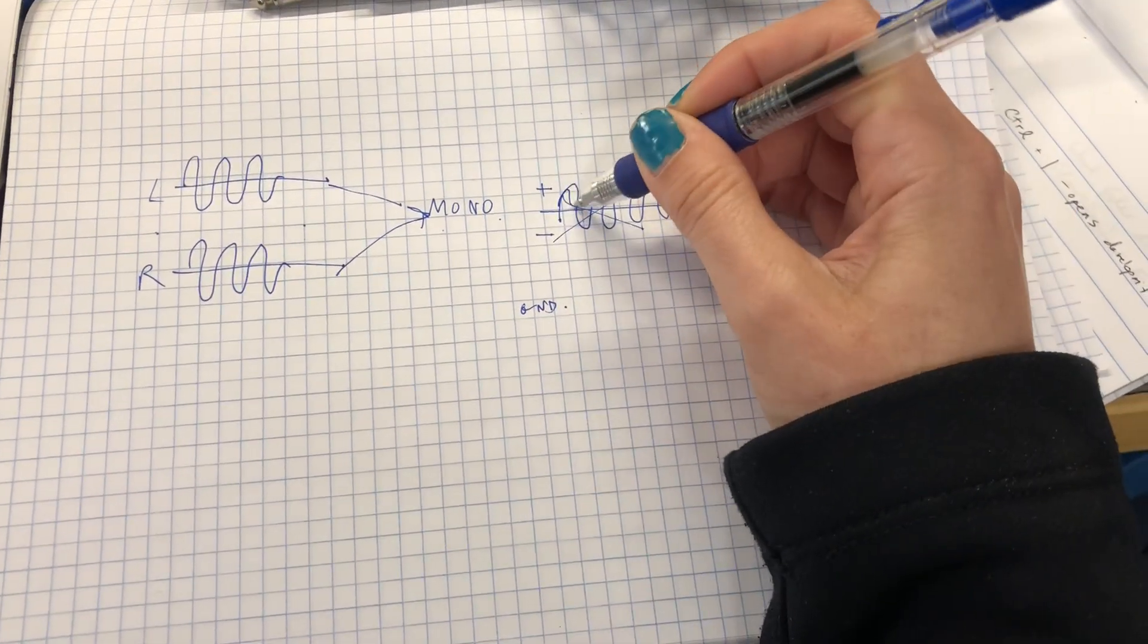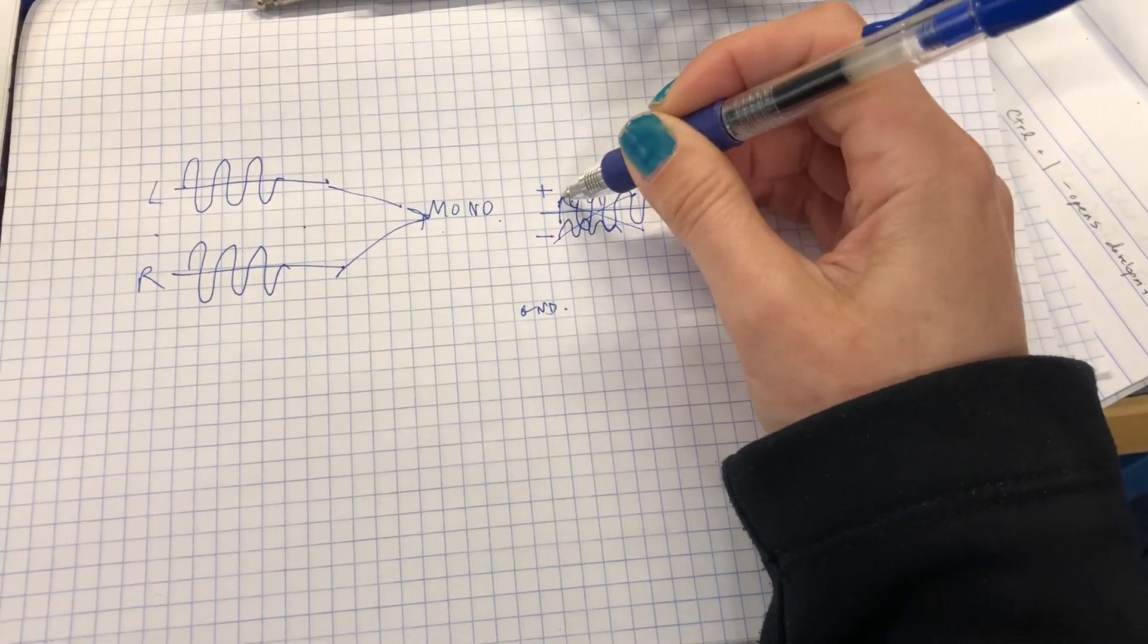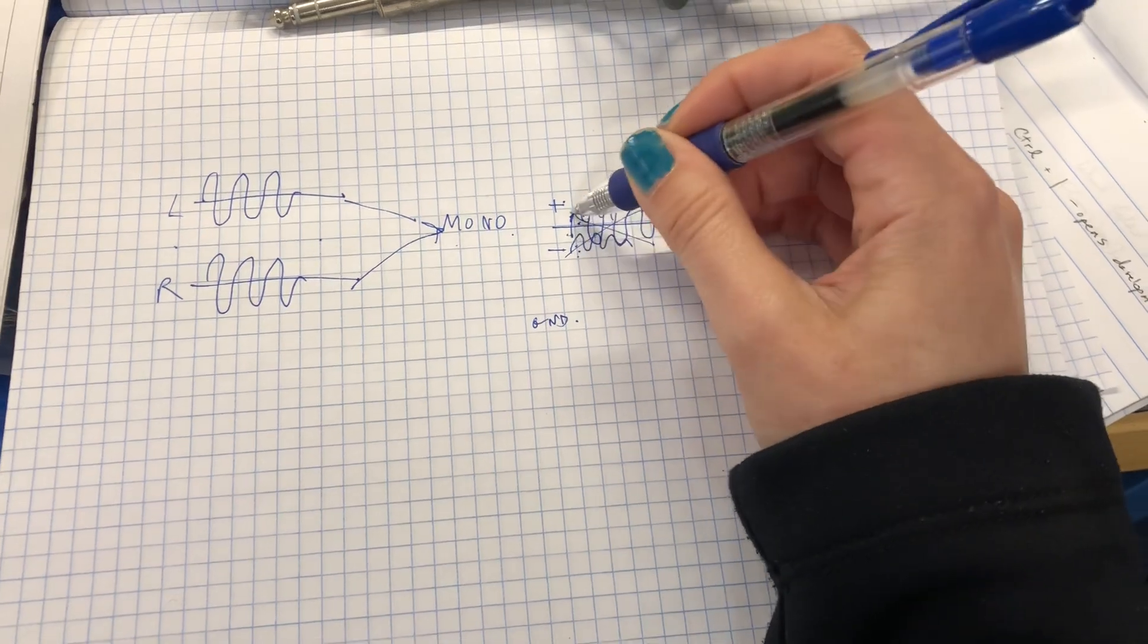Because you have your left waveform up here, you have your right waveform down here, and it's saying this waveform is exactly like this waveform, so therefore I'm not going to output anything.